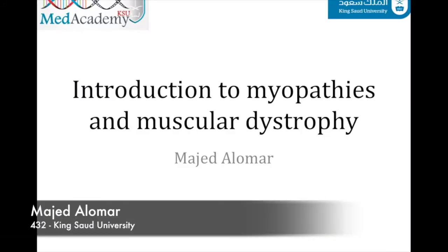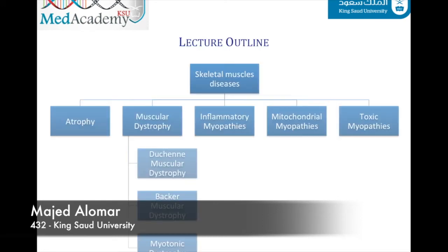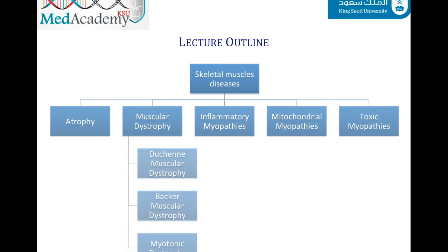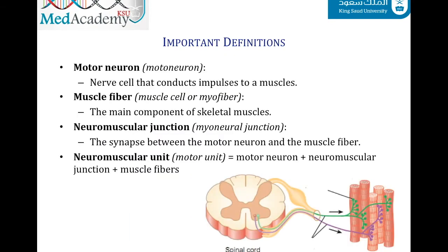Today we'll discuss various types of myopathies, focusing on the pathological rather than the clinical perspective. We'll begin with some basic information, then move to discuss several important muscle diseases, including muscle atrophy, muscular dystrophy, inflammatory myopathies, mitochondrial myopathies, and toxic myopathies.